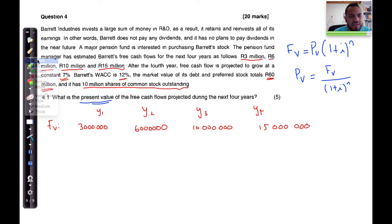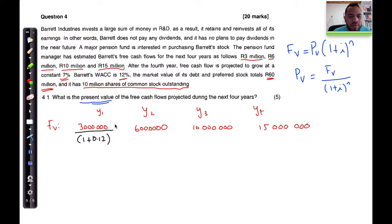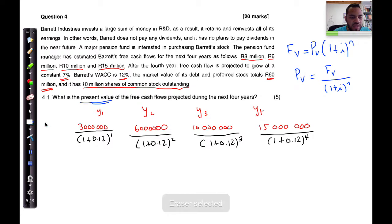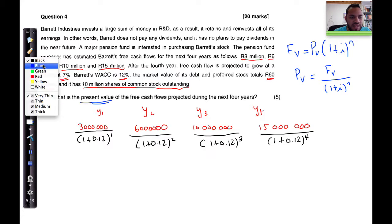Take each future value divided by (1 + i)^n, where i is the weighted average cost of capital of 0.12. For year one: divided by (1.12)^1. For year two: divided by (1.12)^2. For year three: divided by (1.12)^3. For year four: divided by (1.12)^4. Each of those calculations gives us a present value.